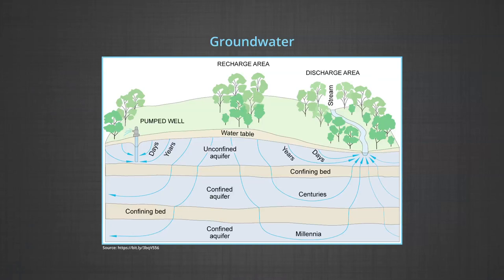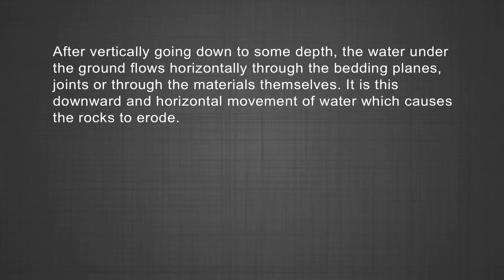Now, we will discuss about groundwater. Here, the interest is not on groundwater as a resource. Our focus is on the work of groundwater in the erosion of landmasses and evolution of landforms. The surface water percolates well when the rocks are permeable, thinly bedded, and highly jointed and cracked. After vertically going down to some depth, the water under the ground flows horizontally through the bedding planes, joints, or through the material themselves. It is this downward and horizontal movement of water which causes the rocks to erode.